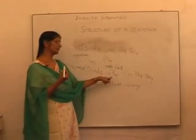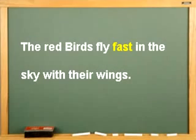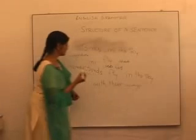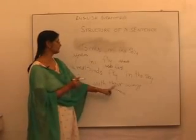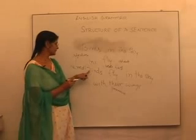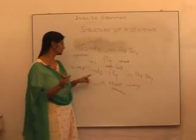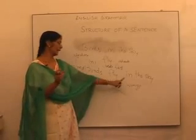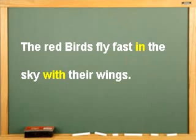And the word 'fast' tells you something about 'fly,' which means it qualifies or describes the verb 'fly.' So hence words like 'fast' are called adverbs. And the word 'their' is a pronoun — that is, we use a pronoun when we don't want to repeat the noun. See, 'the birds fly in the sky with the birds' wings' sounds very clumsy, so instead of repeating the words we use 'their.' And 'in' and 'with' — these two words show the relationship between different words, so they are called prepositions.